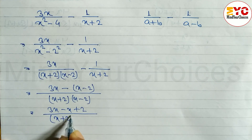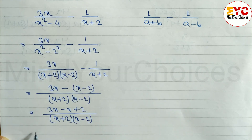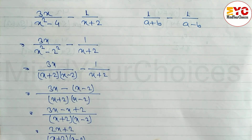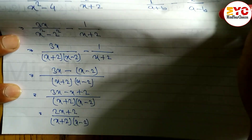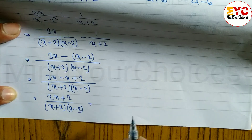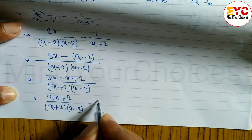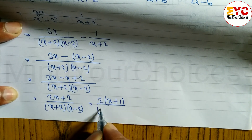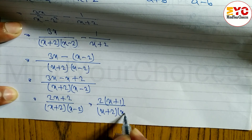Divided by (x plus 2)(x minus 2). When we subtract we get 2x plus 2 divided by (x plus 2)(x minus 2). We can take out the common factor 2, leaving 2(x plus 1) divided by (x plus 2)(x minus 2). That is the answer to the first question.